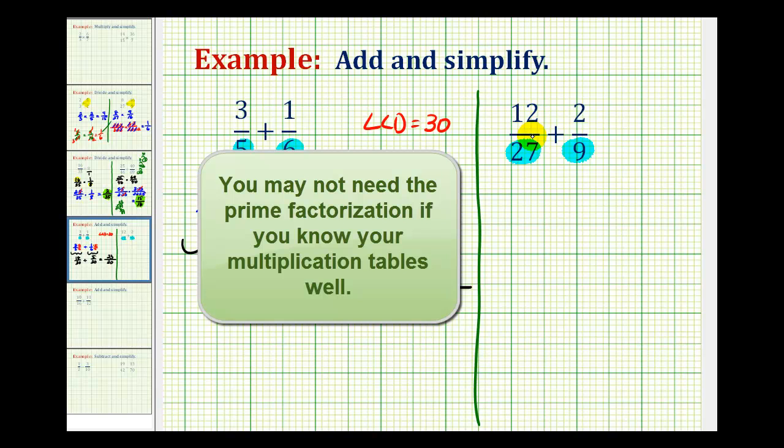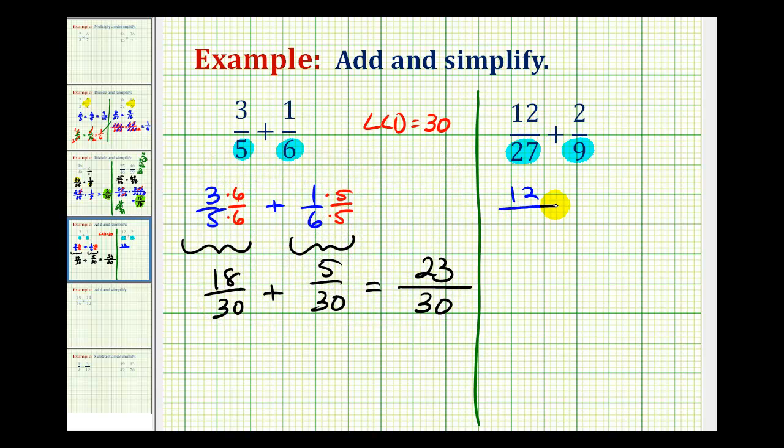So what we're going to do is write this first fraction as 12 over the prime factorization of 27, which would be 3 times 3 times 3, plus 2 over the prime factorization of 9, which is 3 times 3.